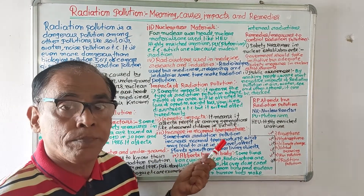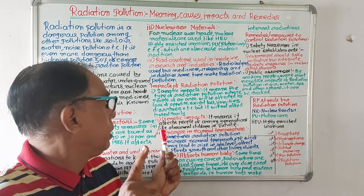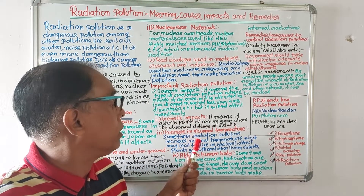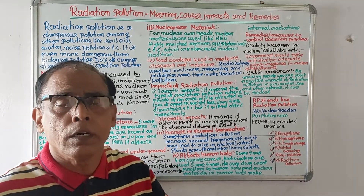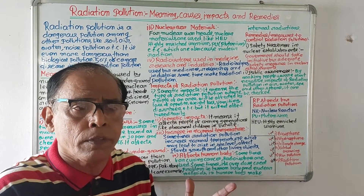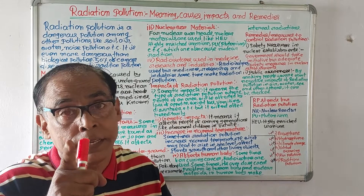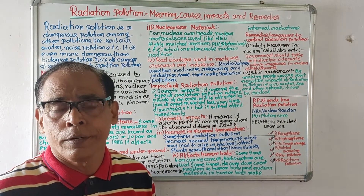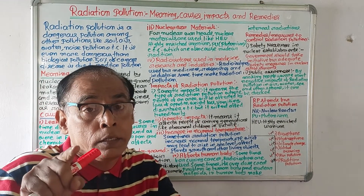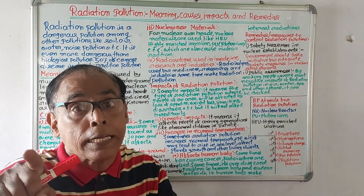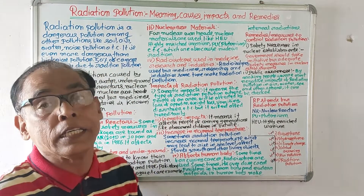Number two: genetic impact. It means radiation pollution affects people of coming generations — like abnormal children in future. Genetic impact means whenever people suffer from radiation pollution hereditarily, it is known as genetic impact. It means radiation will affect people hereditarily, and their future generation also will be affected.